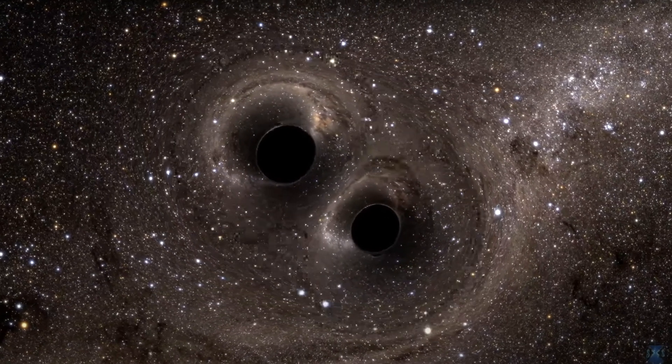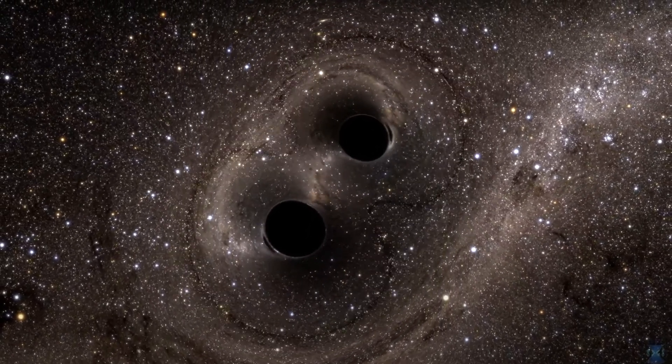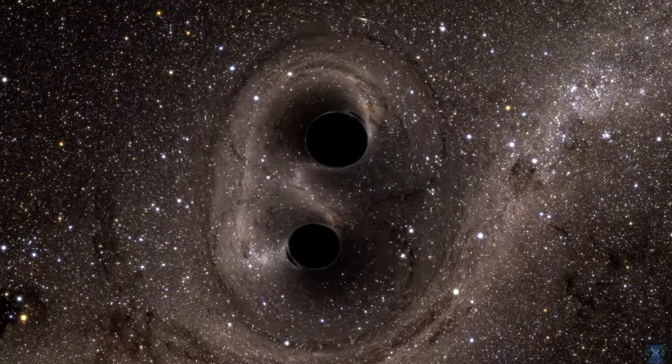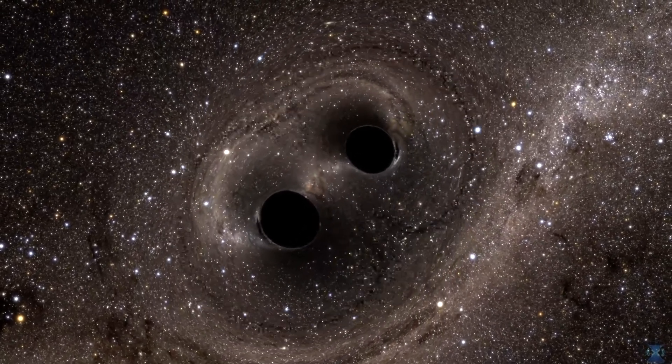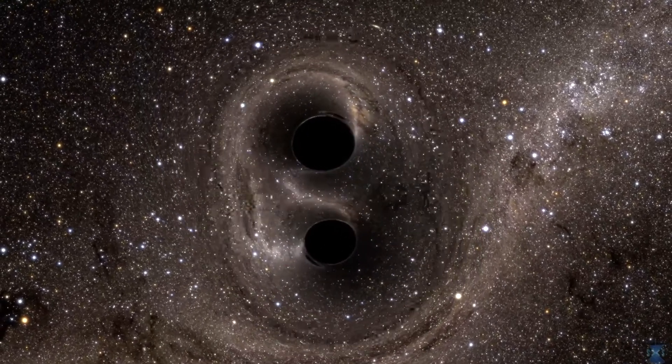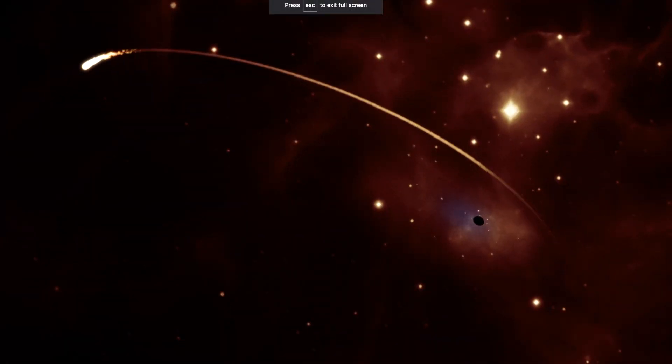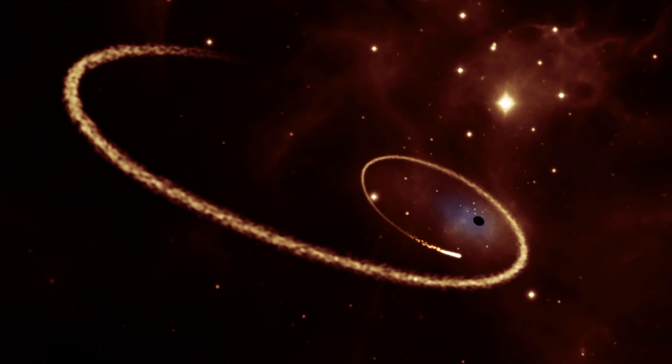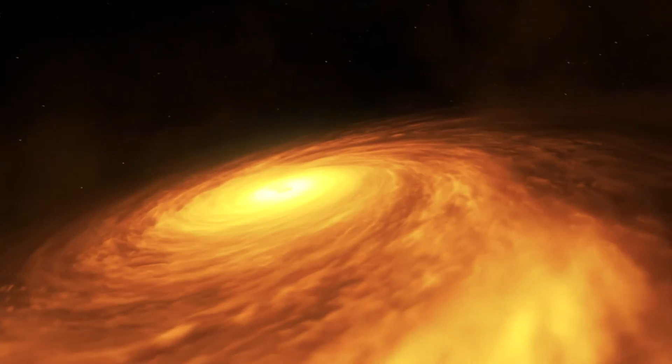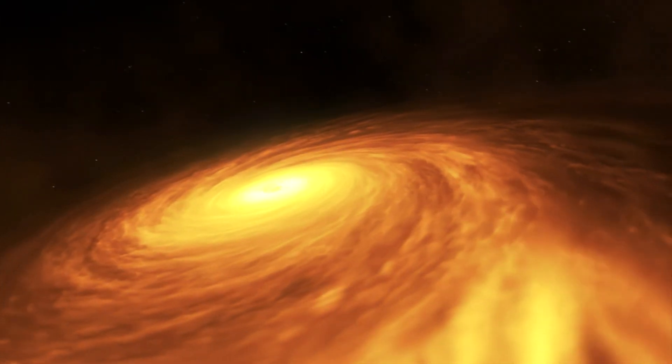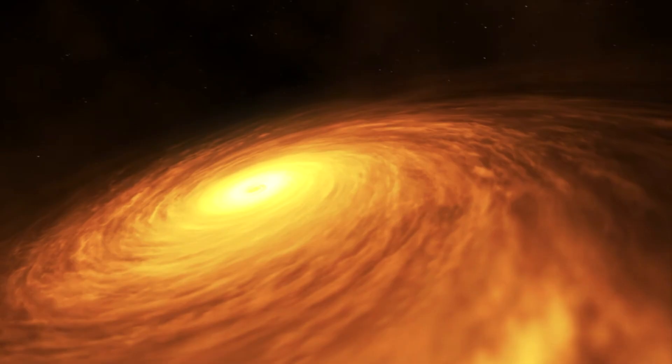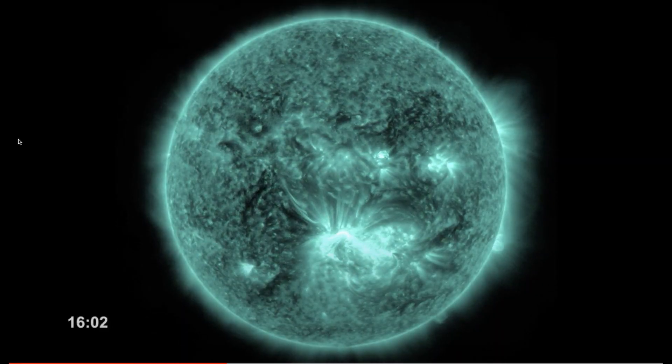Black holes are equal parts intriguing and terrifying. They can consume entire galaxies and can even bend space time around them. So what could possibly make them more dreadful? Well the fact that there's a giant rogue black hole moving through space at roughly 3 million miles per hour of course. B3 1745+25 was discovered by the Hubble telescope in 2017 and is about 1 billion times heavier than our sun. It's believed that this black hole broke away after its galaxy collided with another galaxy and now freely travels through space.